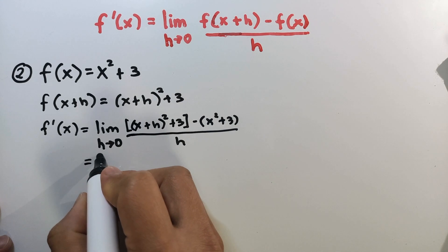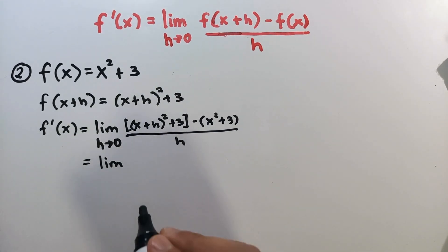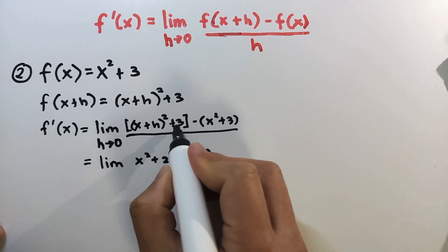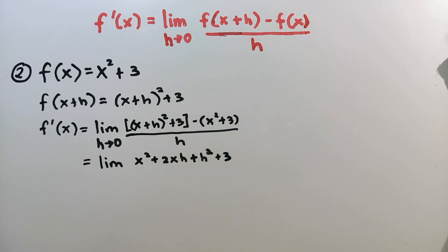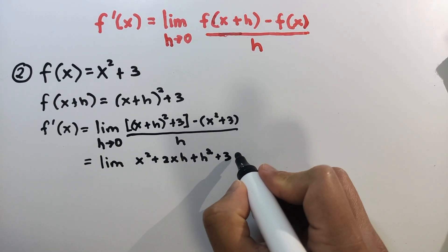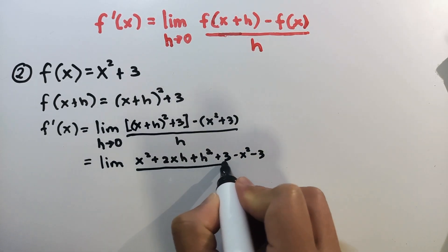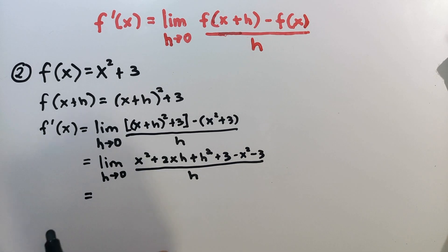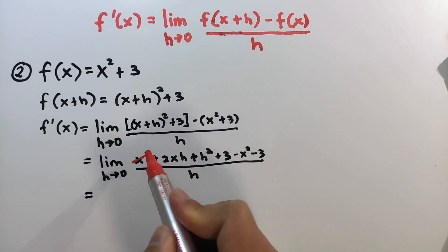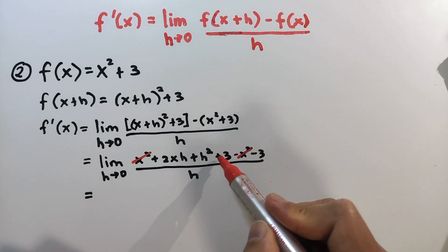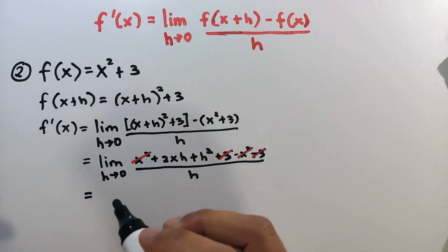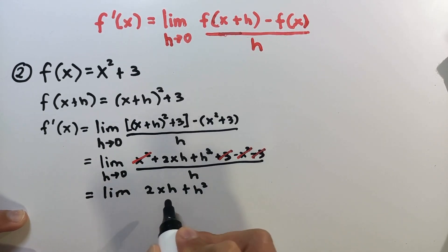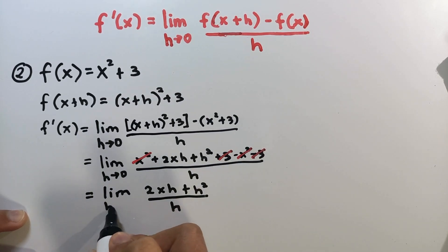We will simplify the numerator. x plus h squared expands to x squared plus 2xh plus h squared, and then we have plus 3. Since this is subtraction of polynomials, don't forget to change the operations: minus x squared minus 3, over h as h approaches 0. Combining like terms: x squared minus x squared is 0, and 3 minus 3 is 0. The remaining terms in the numerator are 2xh and h squared, and for the denominator we still have h.